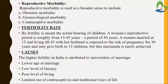Further we learn about the fertility rate. Fertility means the actual bearing of children — the childbearing process. The capacity of giving birth to a baby is known as fertility. A woman's reproductive period is roughly from 15 to 45 years of age, a period of 30 years. A woman married at 15 and living till 45 with her husband is exposed to the risk of pregnancy for 30 years and may give birth to 15 children, but this maximum is rarely achieved.